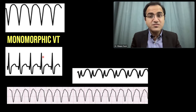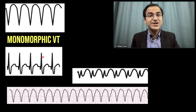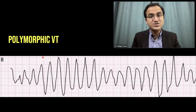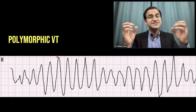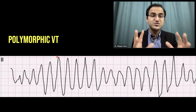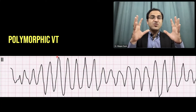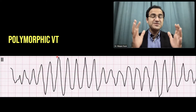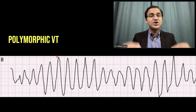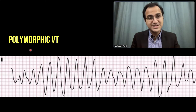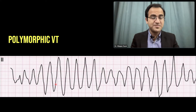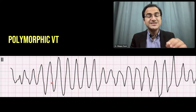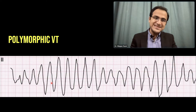If all ectopic foci in the ventricle are equally dominant over each other, they produce a ventricular tachycardia called polymorphic ventricular tachycardia, which is the sum of all these different ectopic foci producing electrical currents simultaneously. Those combined electrical currents form a tachycardia with different shapes of ventricular complexes — that is called polymorphic ventricular tachycardia.